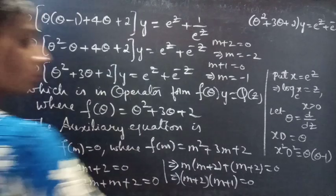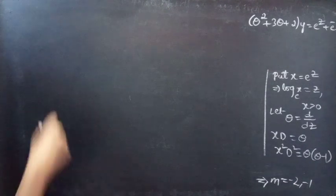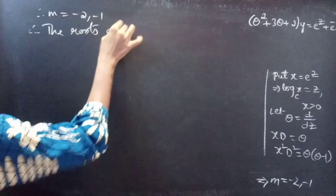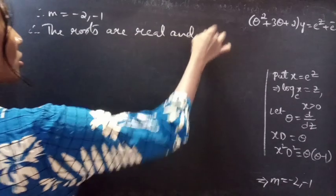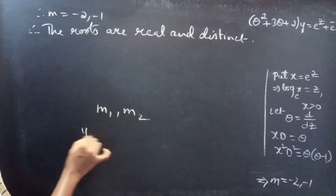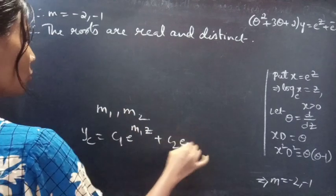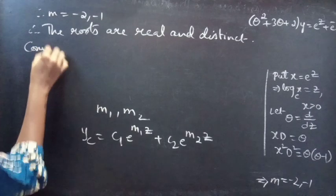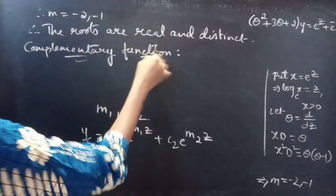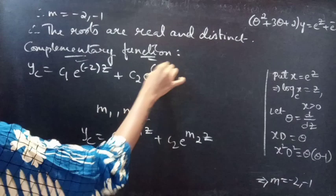The roots are m = −2 and m = −1, which are real and distinct. When two roots m1 and m2 are real and distinct, the complementary function is yc = c1·e^(m1·z) + c2·e^(m2·z). So our complementary function is yc = c1·e^(−2z) + c2·e^(−z).